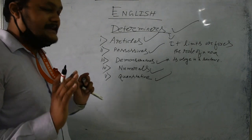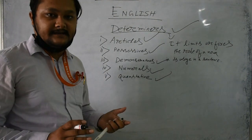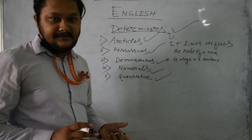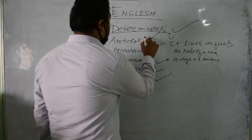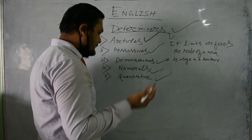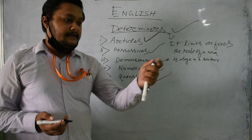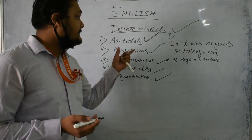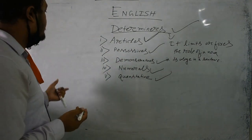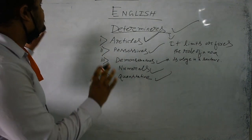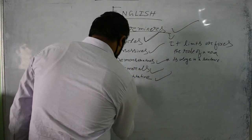The most basic thing about a determiner is the usage of articles, because in any sentence you will, one hundred percent, find the usage of an article. For example, take a sentence: 'The white boat is fixed onto the wall.' Here you can see the article 'the' used before 'white boat' and before 'wall.'